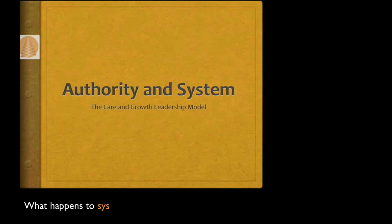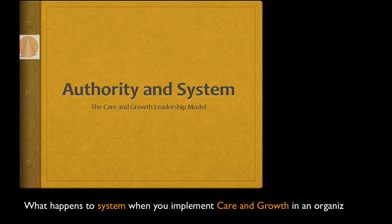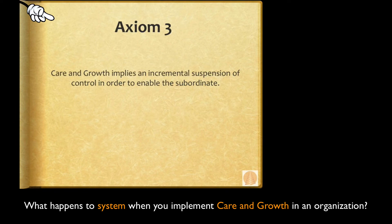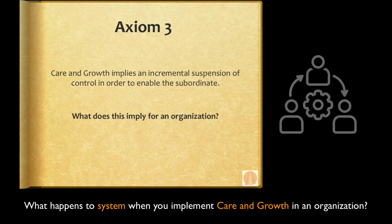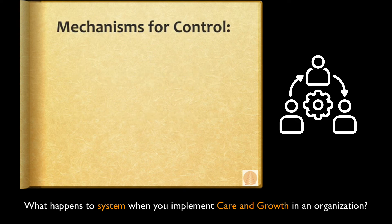We're now going to examine what happens to a system when one implements the care and growth model in an organization. We indicated when we examined axiom three that care and growth implies an incremental suspension of control in order to enable the subordinate, and what that implies for an organization is if you consider what the mechanisms of control are in an organization.